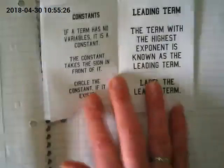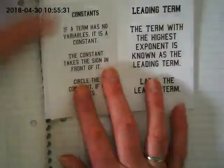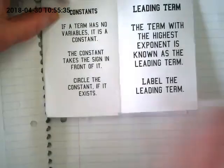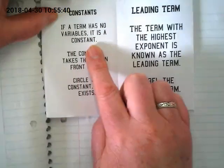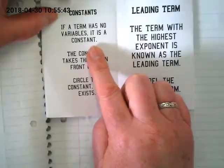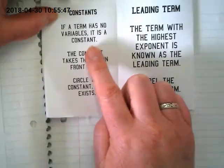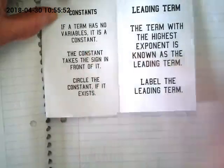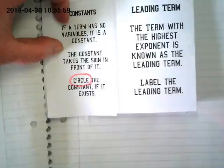Turn to the next few pages. We're looking now at constants and leading term. We had a question earlier about what is a constant. It's a number. It's just a number. If a term has no variables, it is a constant. Plus 3 is a constant. Negative 4 is a constant. 3x is a term where the 3 is the coefficient. Okay? The constant takes the sign in front of it. We will be circling the constant if it exists.